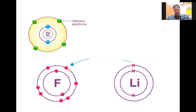Valence electrons means outermost electrons. Here, the first diagram is carbon — it has four electrons in green color, those are the valence electrons. Fluorine has seven electrons in the outermost shell, so it will gain one more electron. The arrow mark indicates gain, so fluorine has a valence of 1. Lithium has only one electron in the outermost shell — it will lose that electron, giving it to another element — so the valence of lithium is also 1. Fluorine gains one electron, lithium loses one electron.